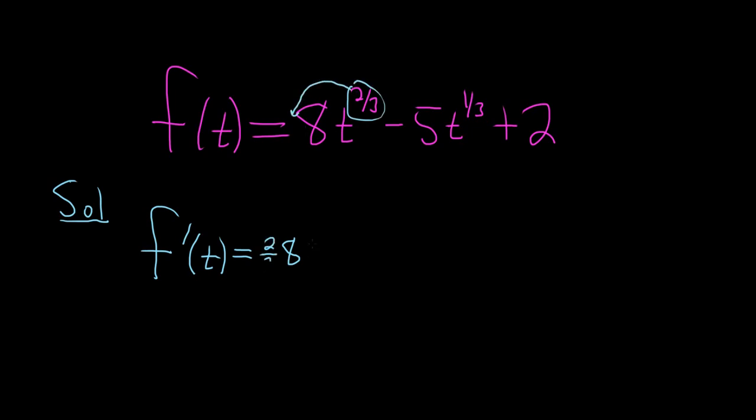So 2 thirds. Then you write your t and you subtract 1 so 2 thirds minus 1. That's really 2 thirds minus 3 thirds which is negative 1 third. So you just get t to negative 1 third.